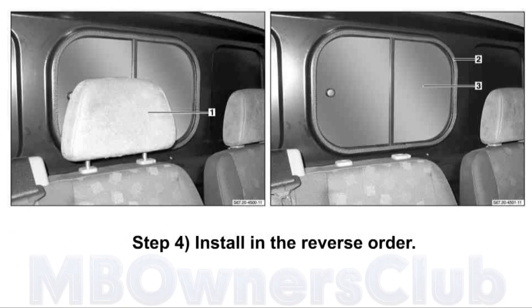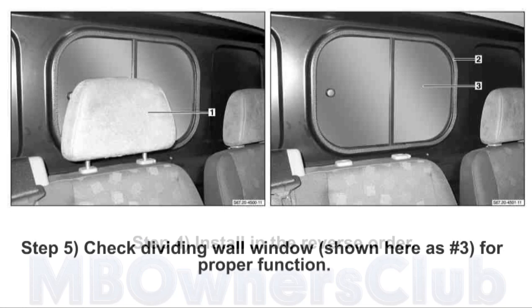Step 4: install in the reverse order. Step 5: check dividing wall window, shown here as number 3, for proper function.